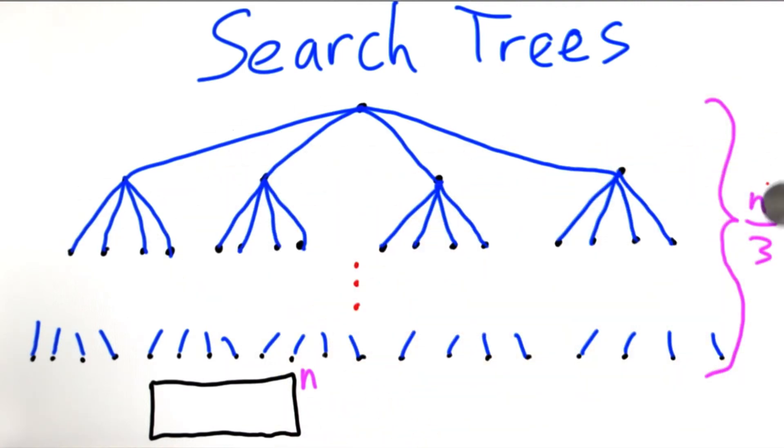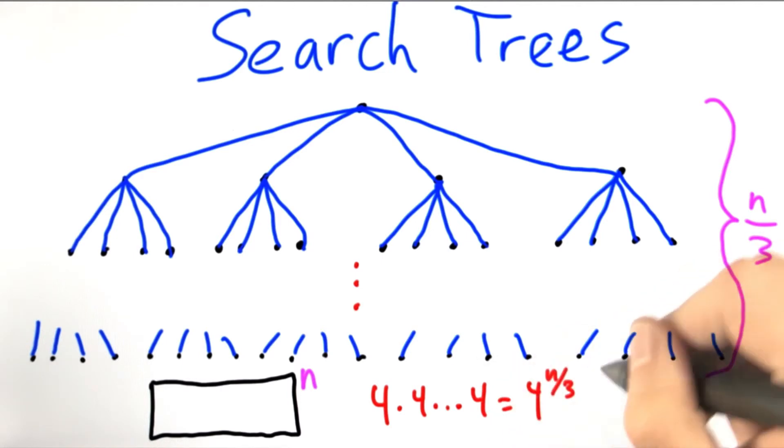So we have four choices, a total of n over 3 times. So that's 4 times 4 times on and on times 4, a total of n over 3 times.